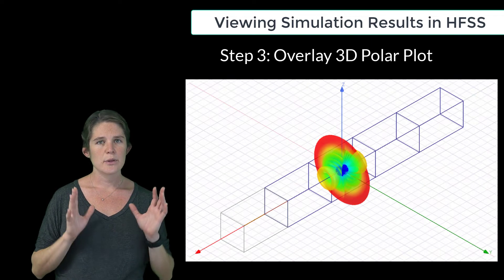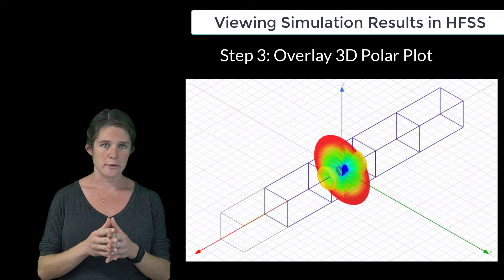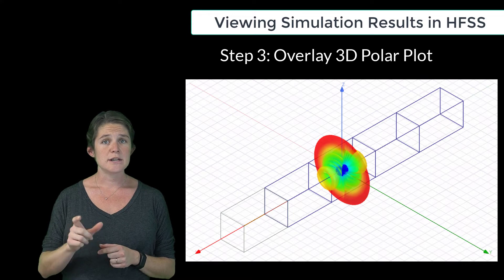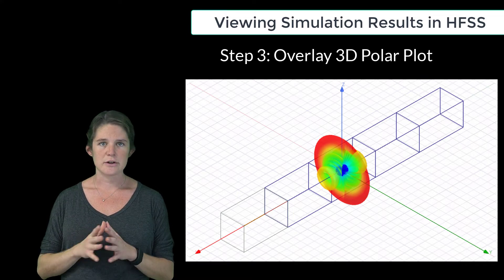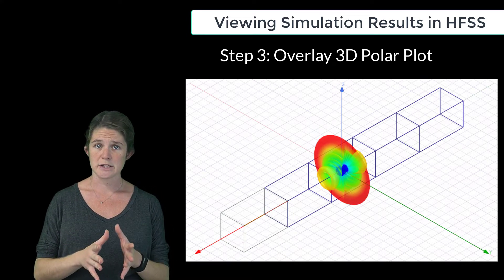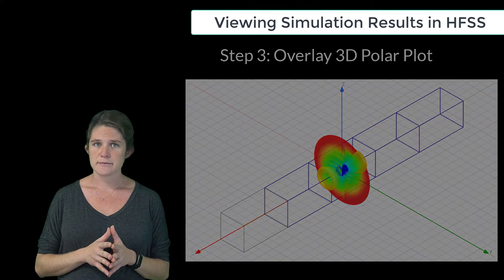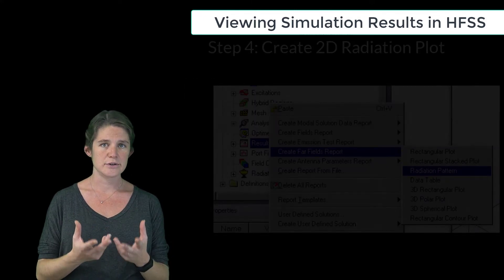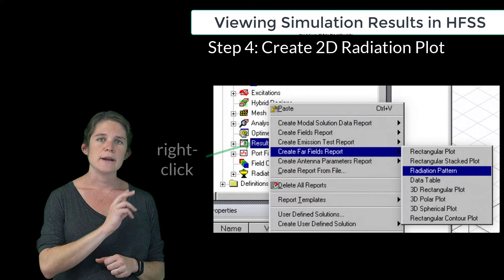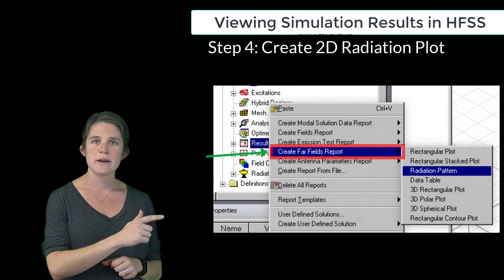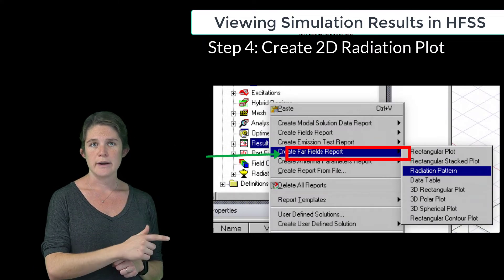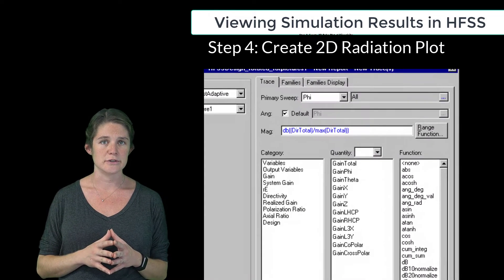Now, 3D radiation plots are great for viewing in the GUI, but 2D plots are much easier to read on paper, and are also much more informative, quantitatively speaking, than the 3D version. So, to create a 2D radiation plot, right-click on Results, and choose Create Far Fields Report Radiation Pattern.